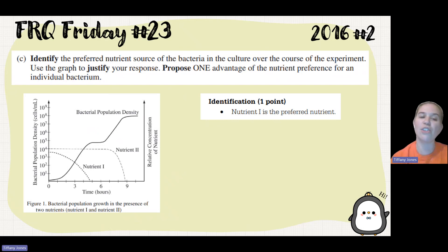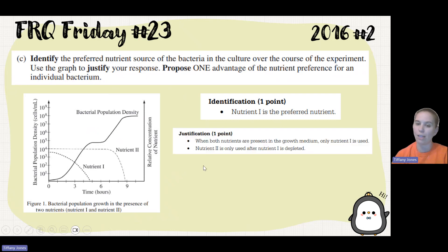Our justification is that when both are found in the media, nutrient one is used first. And we see that nutrient two doesn't get used until after all of nutrient one has been depleted. That's what the scoring guide has. So when both nutrients are present in growth media, only nutrient one is used. Nutrient two is only used after nutrient one is depleted.